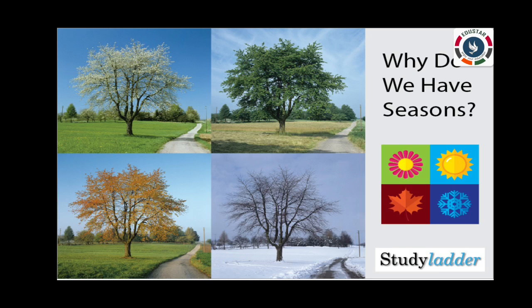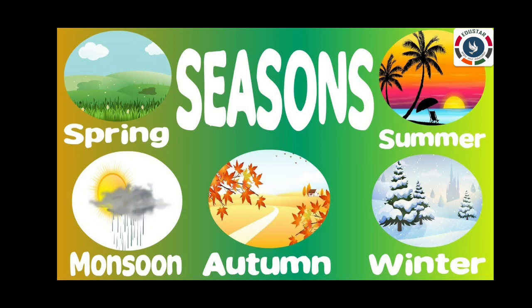Why do we have seasons? The earth moves around the sun in its own orbit. This movement is called revolution. It takes 365 days and 6 hours for the earth to complete one revolution. As the earth is tilted on its axis, the portion of the earth facing the sun has longer and warmer days. So this portion has summer season. The portion of the earth away from the sun has cooler and shorter days. This portion has winter season. Therefore, the revolution of the earth causes changes in weather.